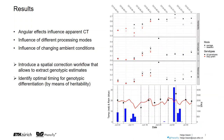Based on these results, we could introduce a spatial correction workflow that allows us to extract genotypic estimates and define optimal processing workflows. Additionally, we also identified optimal timing for genotypic differentiation by means of heritability and minimum influence of phenology.